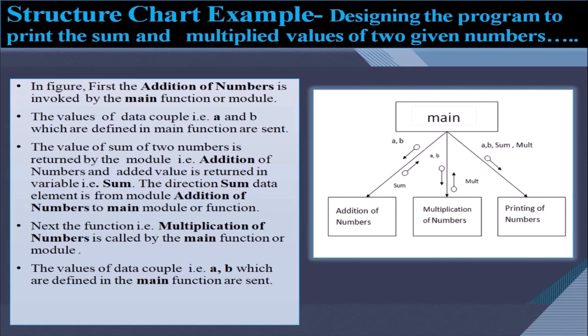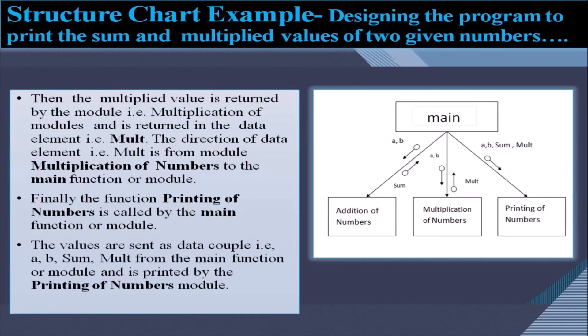Next, the multiplication of numbers module is called by the main function. The values of data couple a and b are sent, and the multiplied value is returned in the data element 'mult', directed from the multiplication of numbers module to the main function. Finally, the printing of numbers module is called by the main function. The values sum and mult are sent as data couples from the main function and are printed by the printing of numbers module, as shown in the figure.